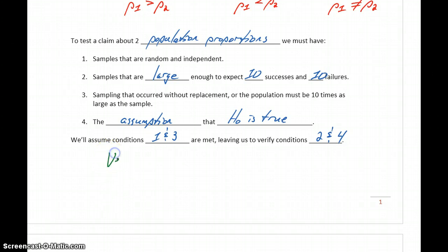And what we need to keep in mind is that we need to verify those conditions for both samples. So it's not enough for one of our sample sets or sample information to meet the conditions. We have to be able to verify the 10 successes and 10 failures with both of the samples.